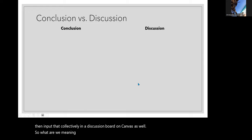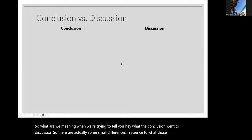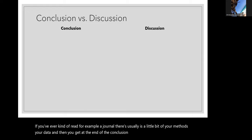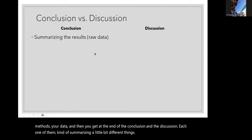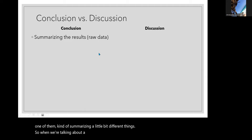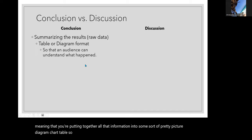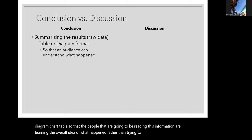What do we mean by conclusion versus discussion? There are actually some small differences in science. If you've ever read a journal article, there's usually methods, data, and then at the end a conclusion and a discussion, each summarizing slightly different things. A conclusion is where you put together all the raw data you collected and do some sort of analysis — compiling that information into a chart, diagram, or table so that readers get the overall idea of what happened rather than going through every single data point.